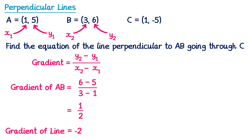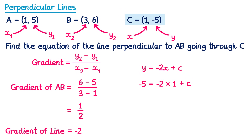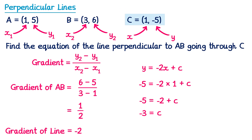So the equation of the line we're looking for is y equals negative 2x plus c. Using point C — we substitute 1 for x and negative 5 for y: negative 5 equals negative 2 times 1 plus c, so negative 5 equals negative 2 plus c. Adding 2 to both sides: negative 3 equals c. Going back and replacing c with negative 3, the final answer is y equals negative 2x minus 3.